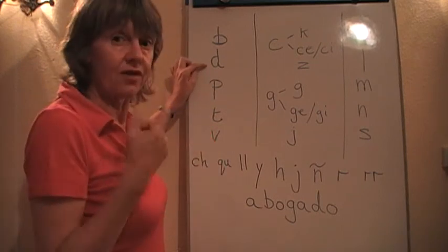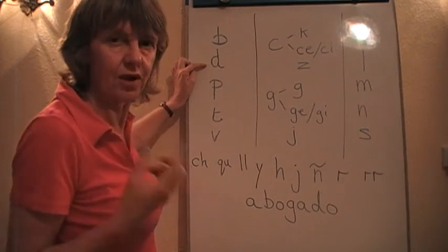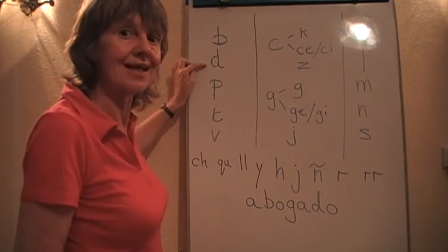D is at the front of the mouth, a very light sound, the tongue gets in the way. It's not made with the teeth, it's made with the tongue.